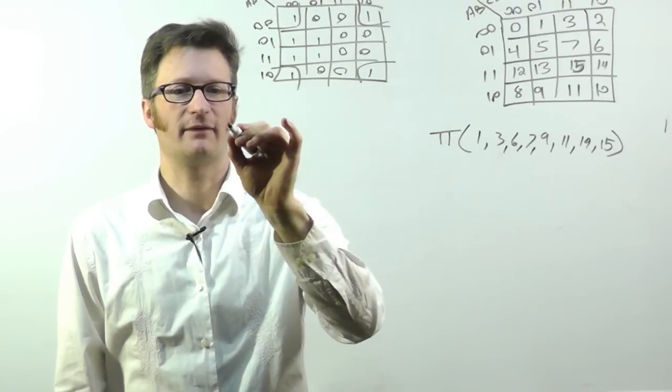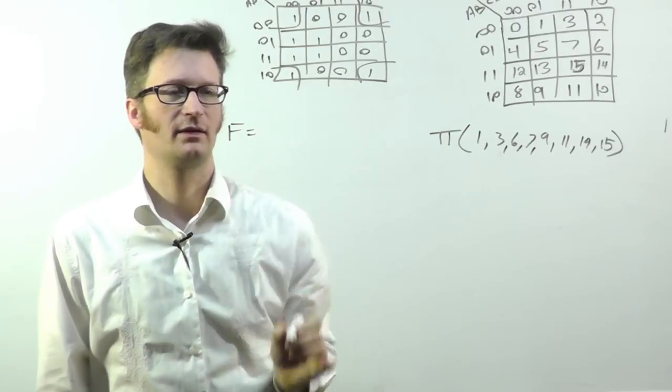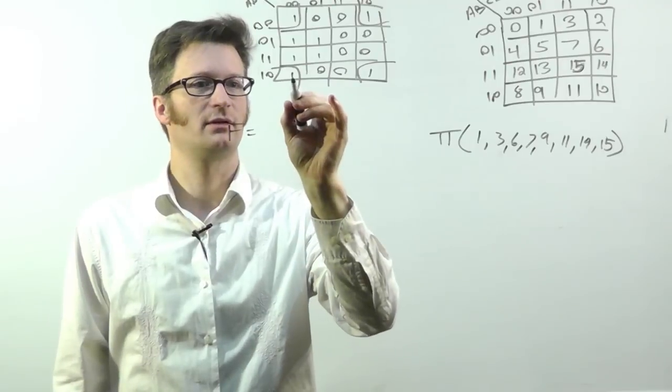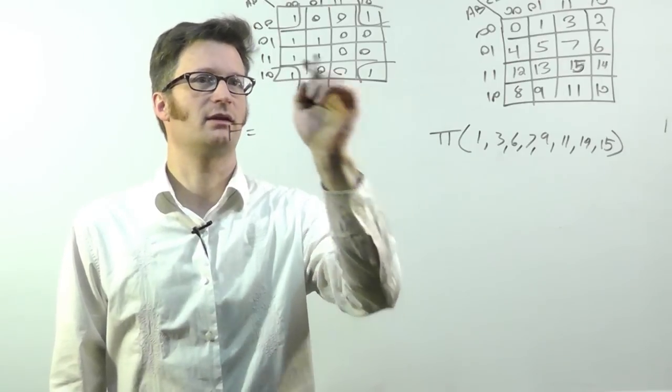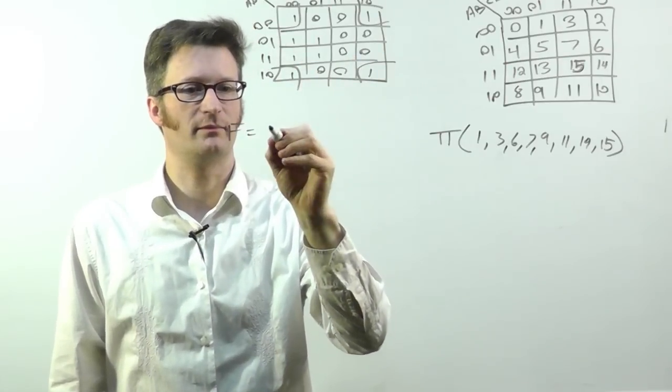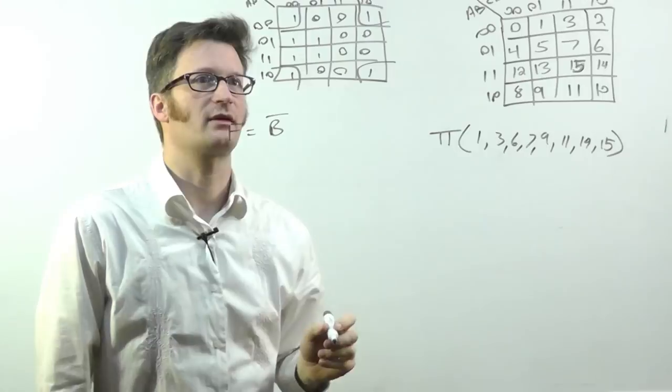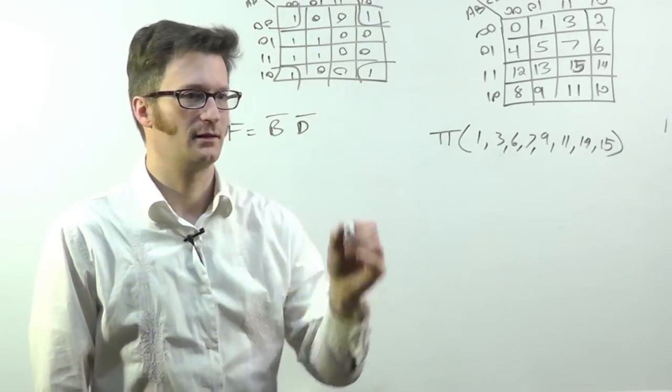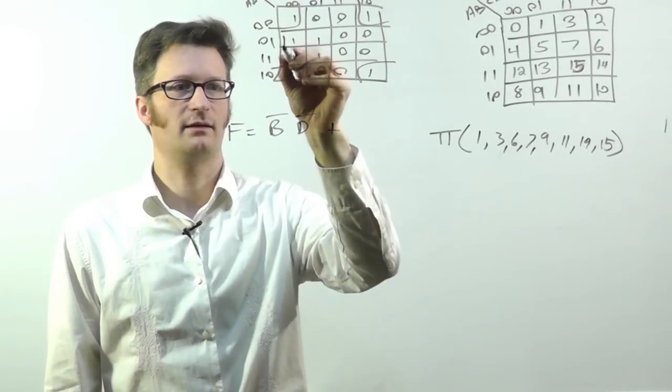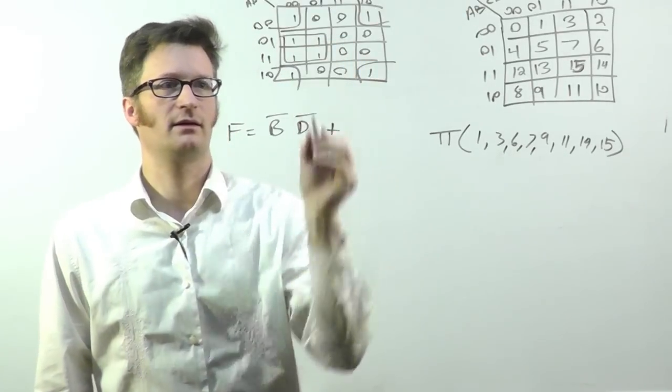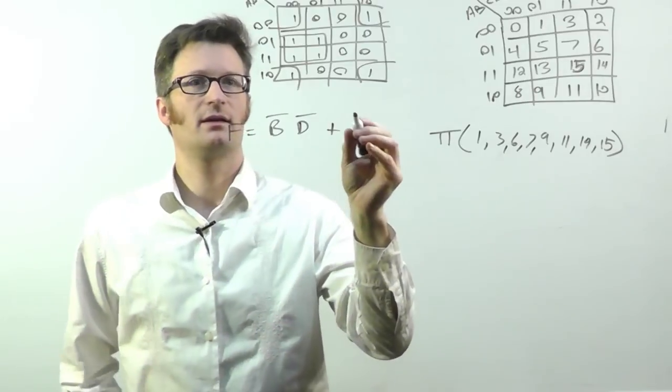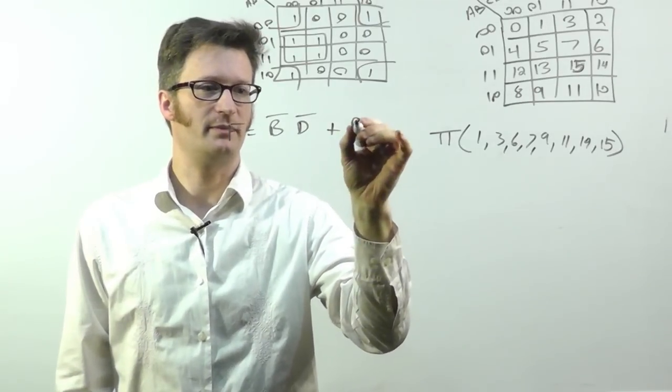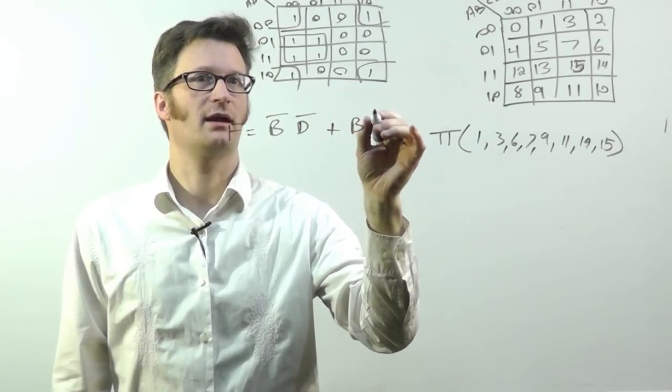And my first term will equal, common in the rows here is that B bar is common and common in the columns is D bar. And then here is another grouping. And common to those is B and C bar.